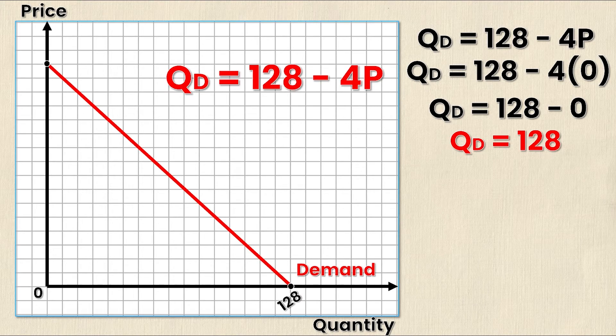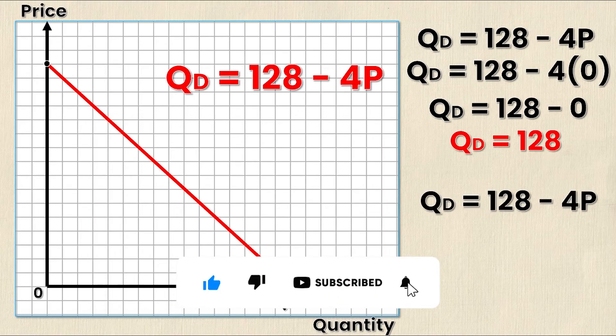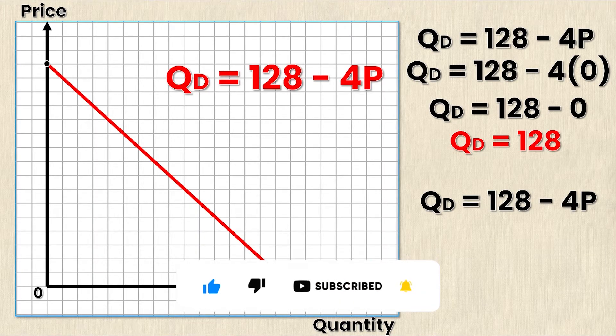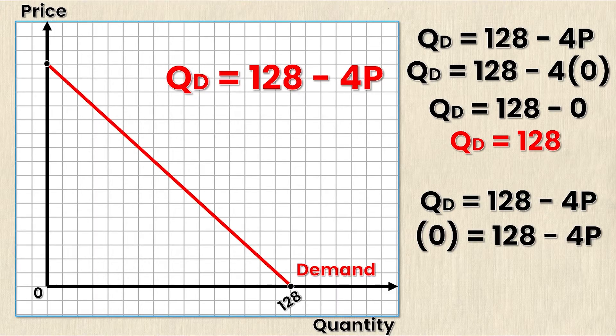So now I can label that on my actual graph and I'm going to do the exact same thing but now for the y axis or the price axis. I'm going to rewrite my general demand equation but this time instead of letting P equal zero, I'm now going to let Q equal zero because any point on the y axis the x value must be equal to zero. So this time I sub in Q = 0 and then I solve.